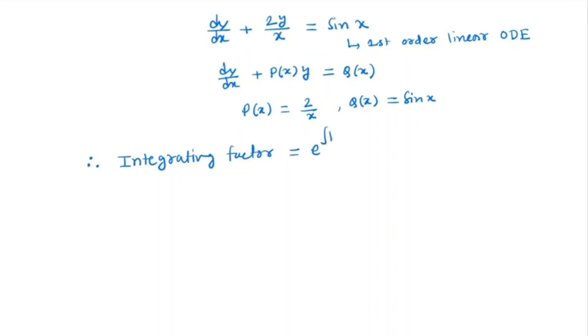By the formula e to the power integral p(x) dx, where integral p(x) dx is integral of 2/x, which is e to the power ln x squared. Now since e and ln are inverse of each other, they cancel, so it is nothing but x squared.